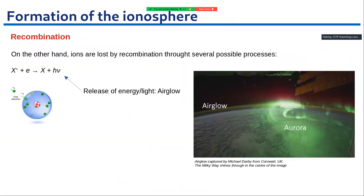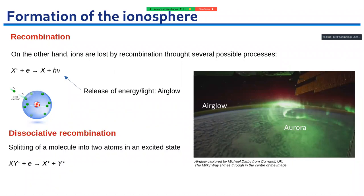Photoionization is the source of the ionosphere, but there are also loss processes. One is recombination: ions are lost by recombining with an electron, producing an atom and releasing energy. An example of this is airglow — the light you observe from the ionosphere, which should not be confused with auroras, which are formed by a different process. You can also have dissociative recombination, where a molecular ion splits into atoms in unexcited states.